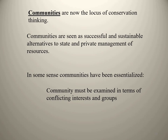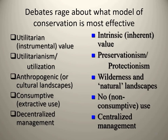The debate rages on about which model of conservation is most effective. On one hand, we have the utilitarian or instrumental value of biodiversity — value it because we need it, use it, and rely on it, and want to be able to do so in the future. And then the intrinsic or inherent value — nature for nature's sake, value it because it exists, the tree has rights just like a person. What model people think is most effective has a lot to do with how they view nature, the environment, and humanity's place in it.